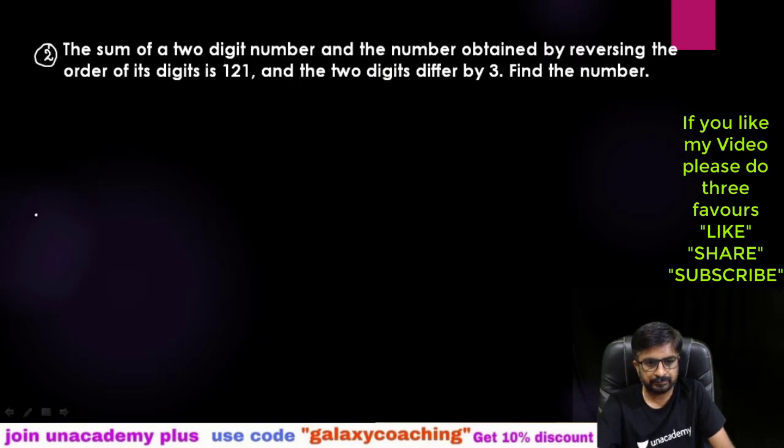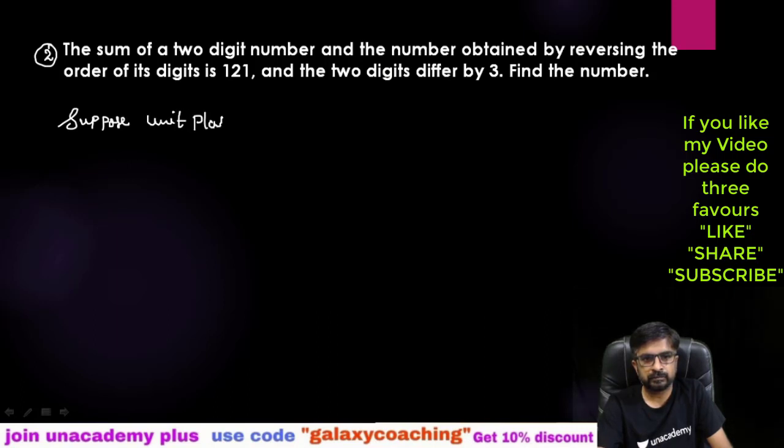Moving towards the next question. Question number two: The sum of a two digit number and the number obtained by reversing the order of its digits is 121. Again you need to understand two digit number. So you need to suppose unit place equals x and tens place digit equals y.